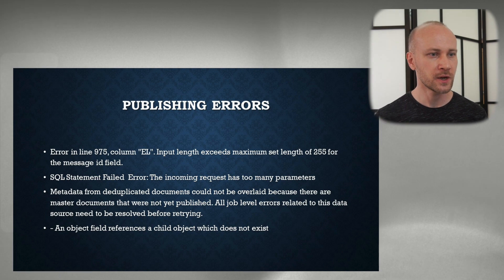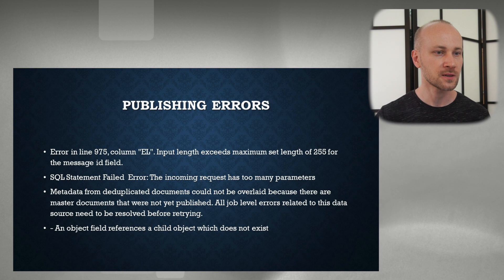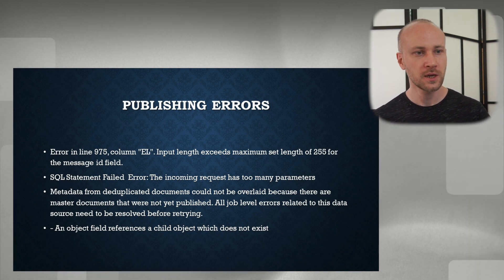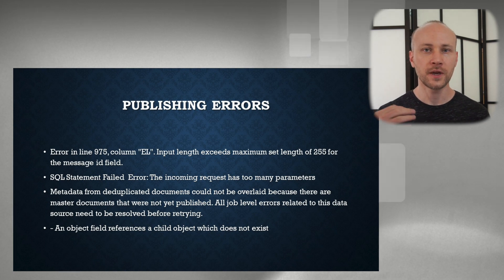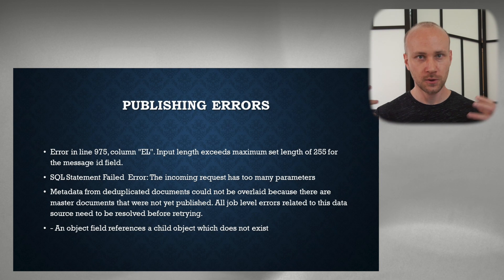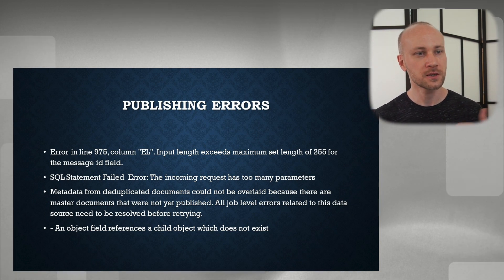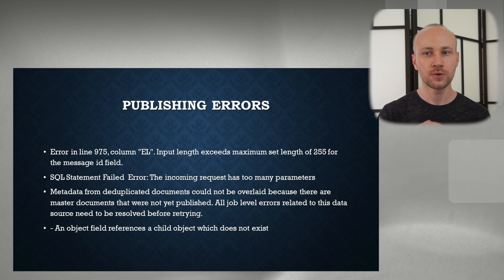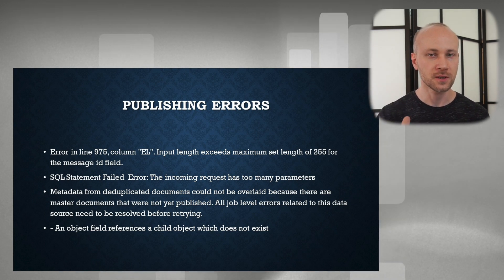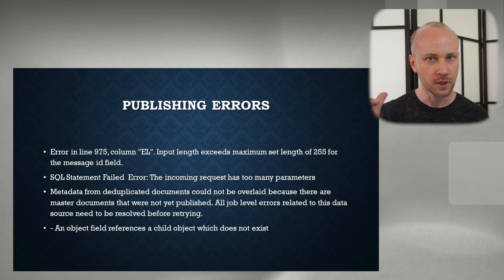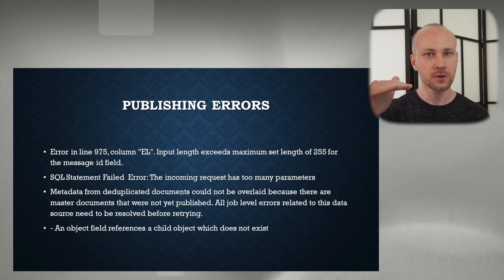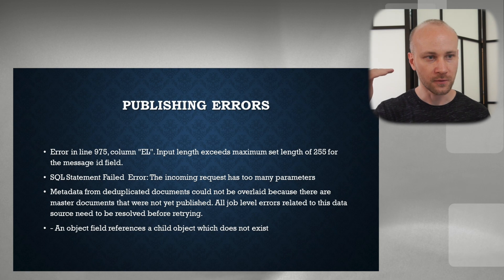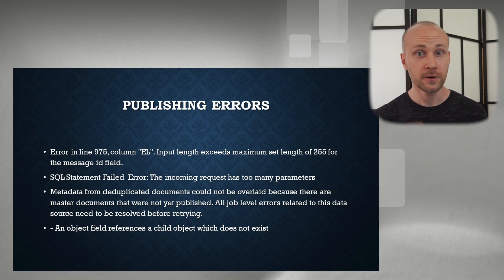Next error: "Metadata from duplicate documents could not be overlaid because their master documents were not yet published." This happens for a couple of reasons. The way publishing works is: first, documents get published, then duplicate information gets updated — duplicate custodian and duplicate path get overlaid onto existing documents. So if your original document failed to publish, when the publishing process finishes it tries to update duplicate custodian and it's not able to because your original document failed. You need to go back and fix your first error, then retry your second error, and everything will be fine.